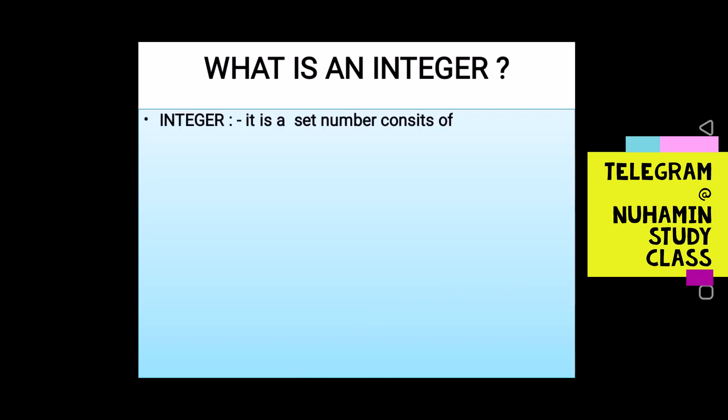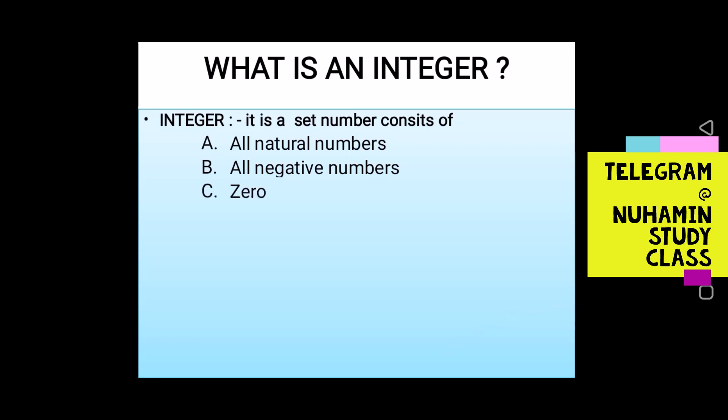An integer is a set of numbers that consists of all natural numbers, and all negative numbers, including zero. This is the integer.